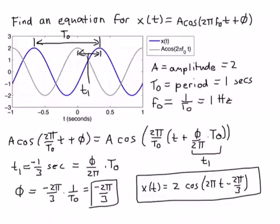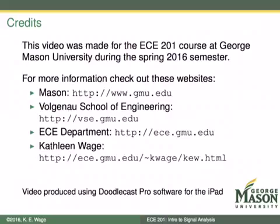This is actually a pretty easy problem. We read things directly off the plot: the amplitude, the period (which allows us to calculate the frequency in hertz or radian frequency), and the time shift, which lets us compute φ. This problem is pretty straightforward, and with a little practice you should be able to do this with ease. This video was made for the ECE 201 course during spring 2016. If you want more information about this course, George Mason University, or the Volgeneau School of Engineering, check out these websites. Thanks for listening.